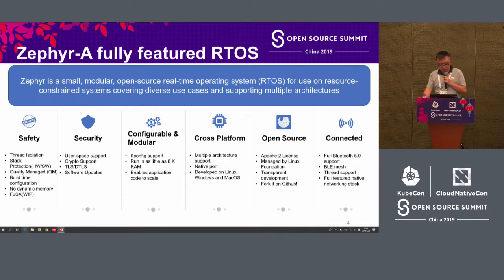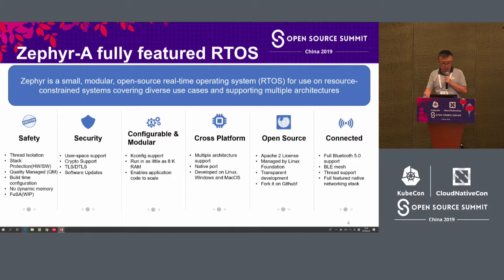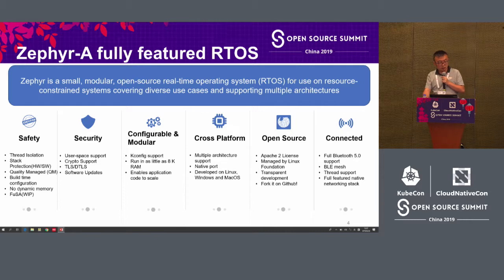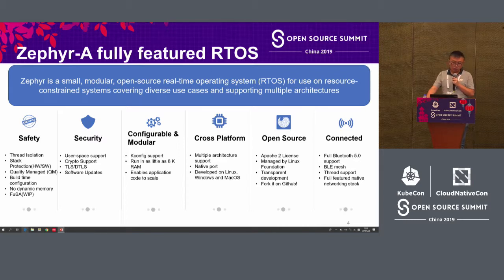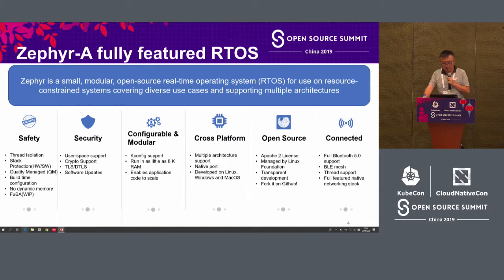For security, it is more about information security in English. It supports user space and different encrypted databases, and we also support software updates. The config supports RAM as little as 8KB, enabling application code to scale. It is cross-platform, supporting multiple architectures including x86, RISC-V, and has native support. For open source, it has an Apache 2 license managed by the Linux Foundation.